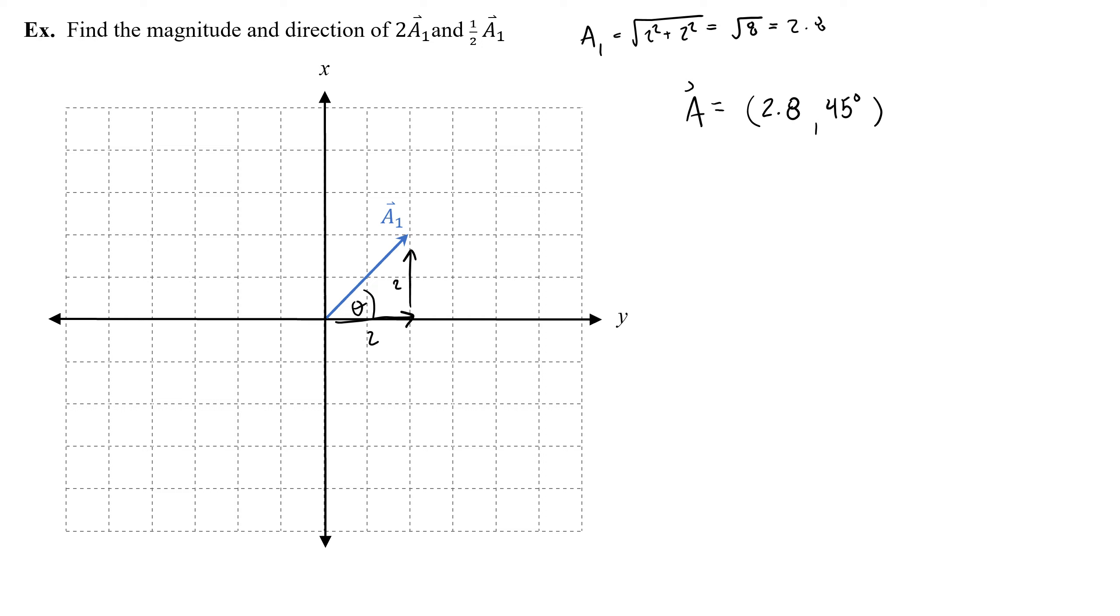2 times a1 would simply just be this vector here with the same angle. So 45 degrees would be the same. Only it would be twice as long. Meaning it would go here. So now I have x components of 4 and 4. So the magnitude of 2a1 is the square root of 4 times 4, which is the square root of 32, or we'll say 5.6. And you might notice, oh, well that's just 2 times 2.8. So we don't even really have to do that process to figure out the magnitude. We can just scale that magnitude and multiply it by 2.